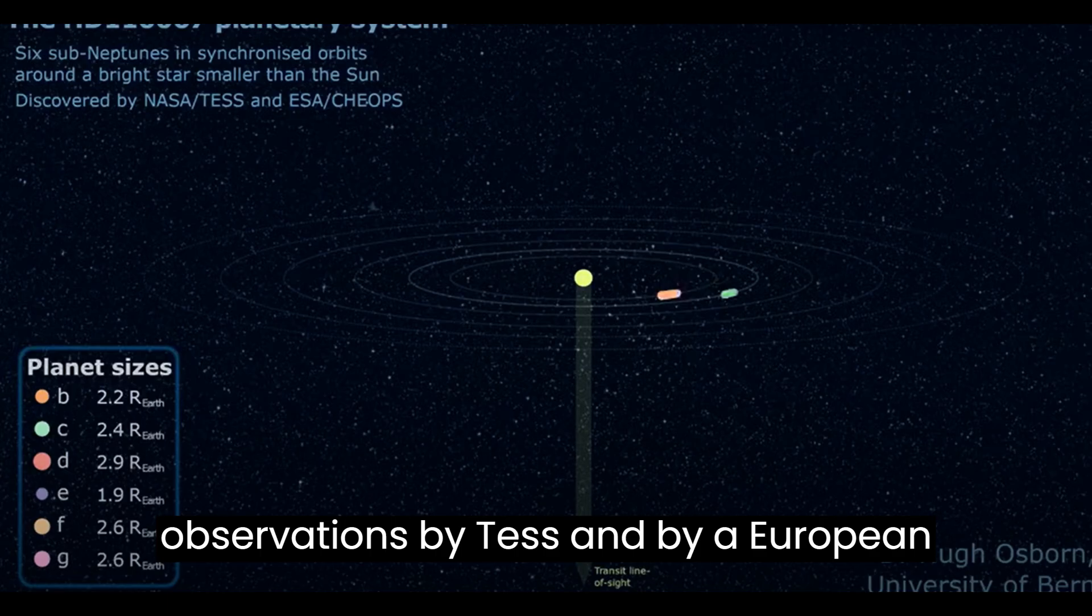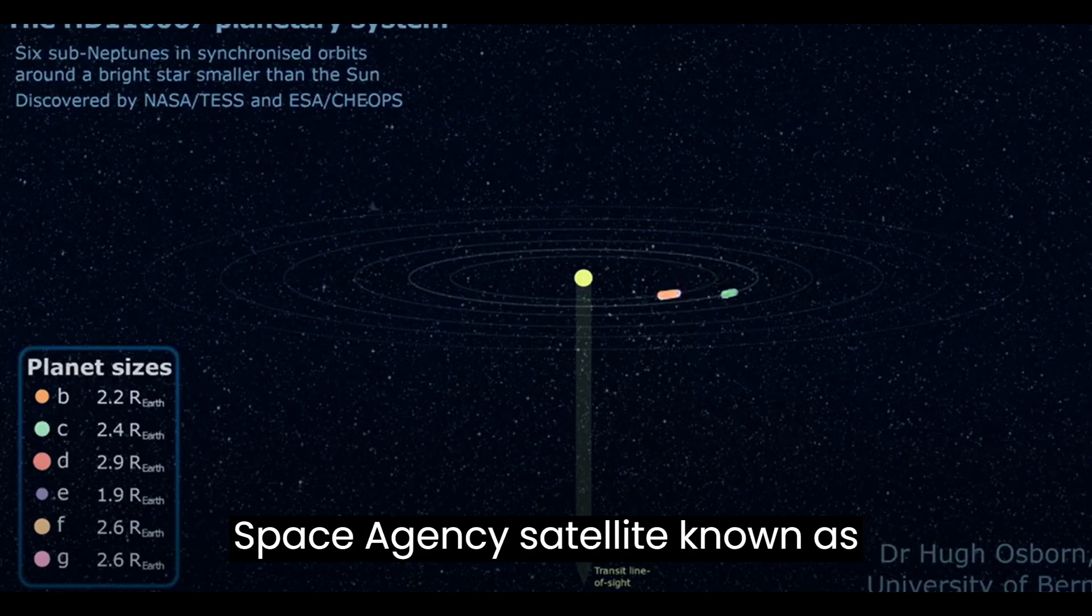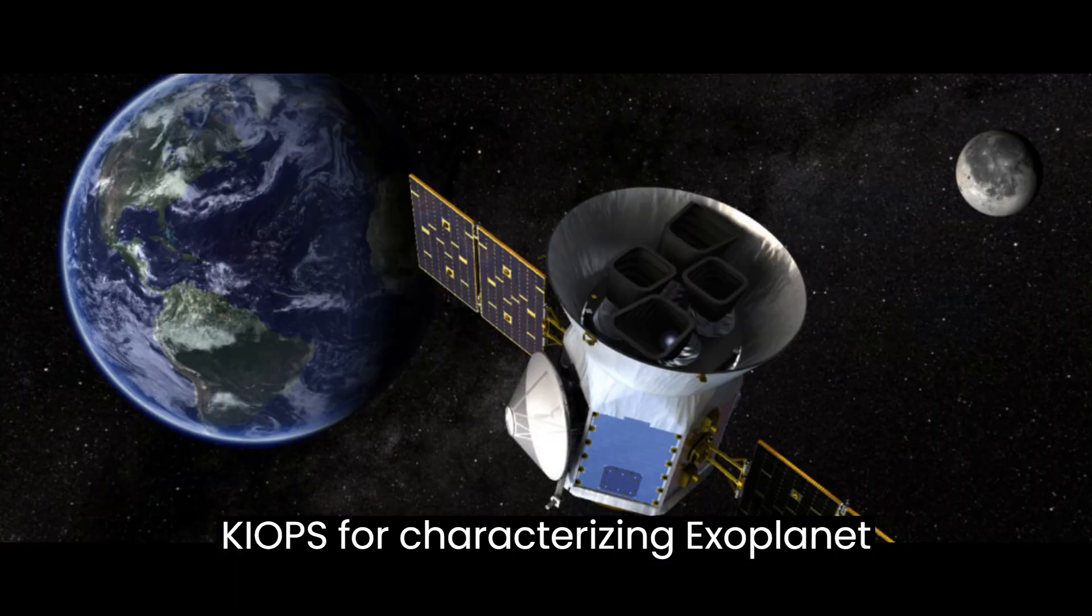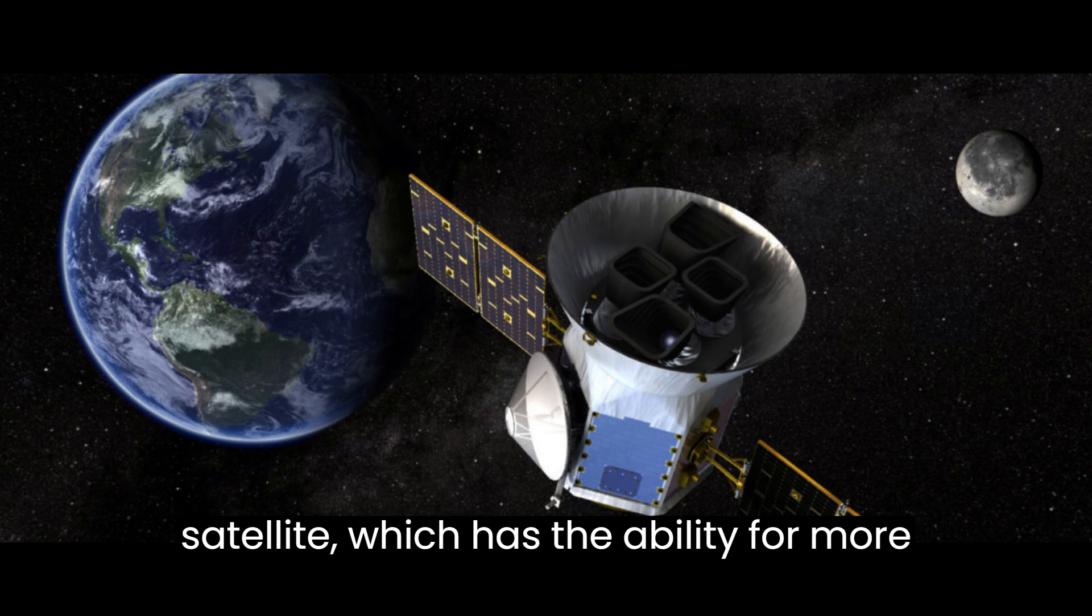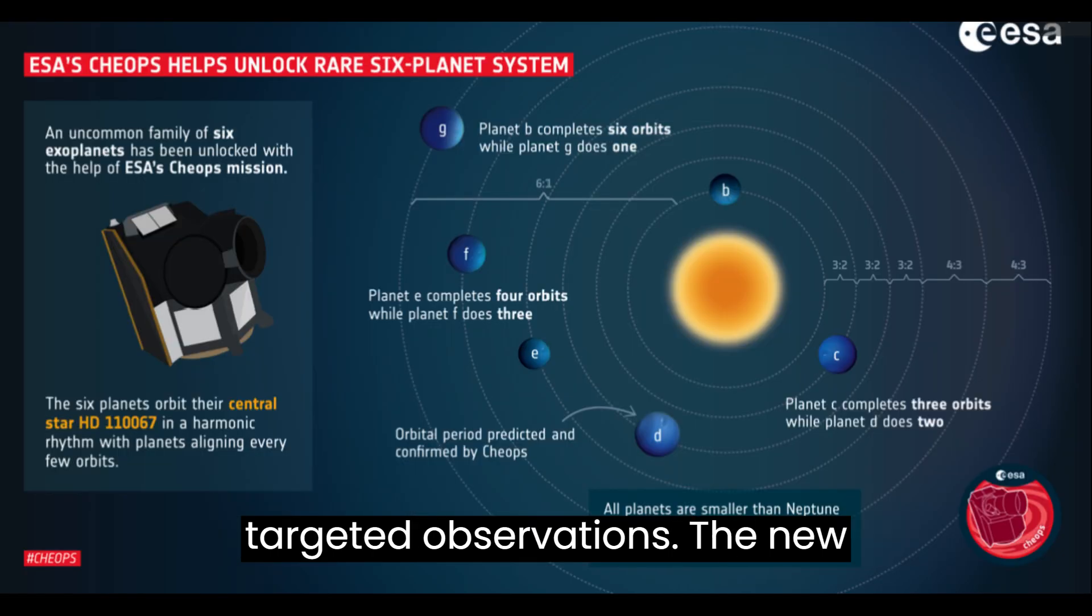The planetary roster filled out in 2022 during another set of observations by TESS and by a European Space Agency satellite known as CHEOPS, for characterizing exoplanet satellite, which has the ability for more targeted observations.